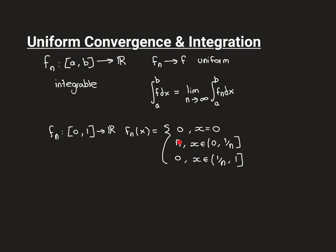On the interval (0, 1/n], I'm going to map it onto n. And then afterwards, from 1/n to 1, not including 1/n, all the way up to 1, I'm going to map it onto 0. Let me go through the first few examples so that you get the idea.